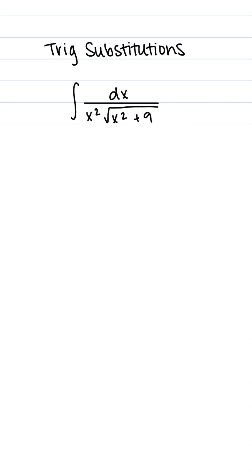Here we have the integral of dx divided by x squared times the square root of x squared plus 9. Here we have the form x squared plus a squared, which we can see our a is going to be equal to 3, so we're going to use the form of x equals 3 tangent of theta.